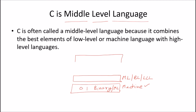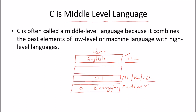At the top level is the user. Users interact with normal English language — those sentences and expressions are called high-level language. In between high-level and low-level language, there is a language that provides communication and has features of both — that is called the middle-level language. C is the middle-level language because it combines the best elements of low-level machine language with high-level language.